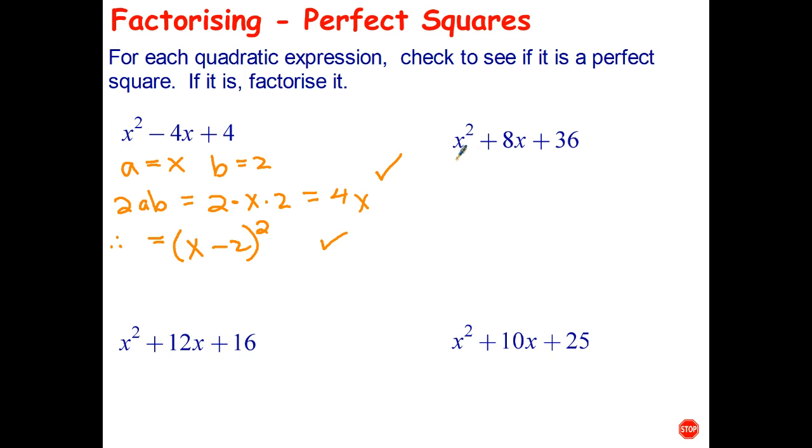Let's try this one. Well, if it is a perfect square, a is equal to x, b is equal to 6, and 2ab is going to be 2 times x times 6. Well, 2 times 6 is 12 times x is 12x, but I have 8x in the middle. So that one can't be factorized as a difference of squares. Now, it might be possible it can be factorized another way, but not by using this particular pattern.